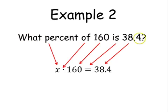So we've transferred this sentence into a mathematical equation, and now we're going to solve for x. And if we have x times 160 equals 38.4, we want to isolate x or get x alone, solve for x.